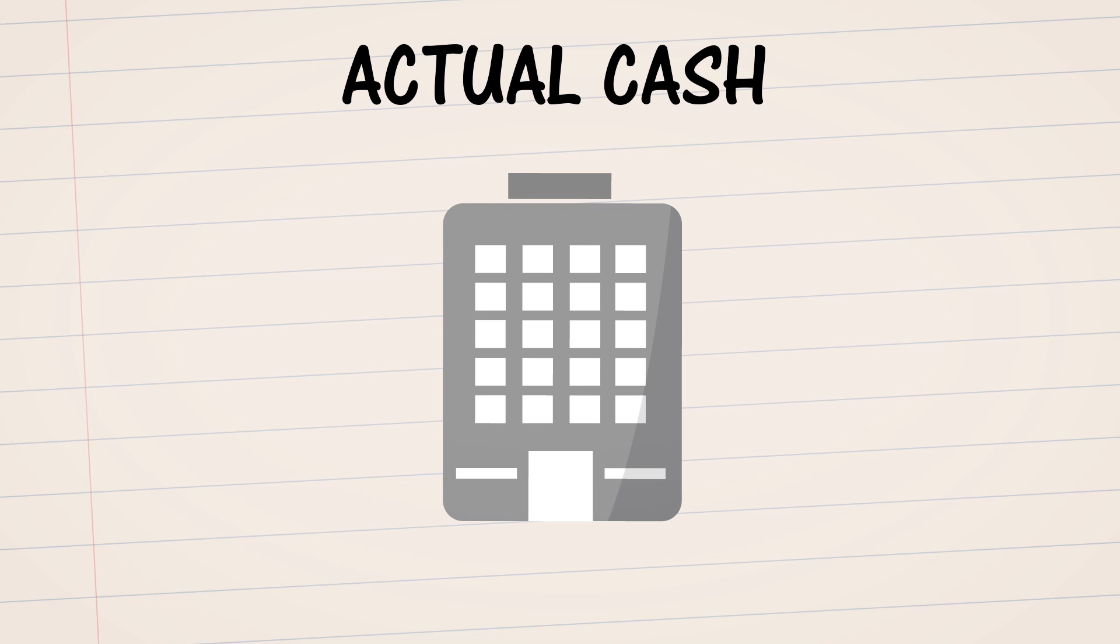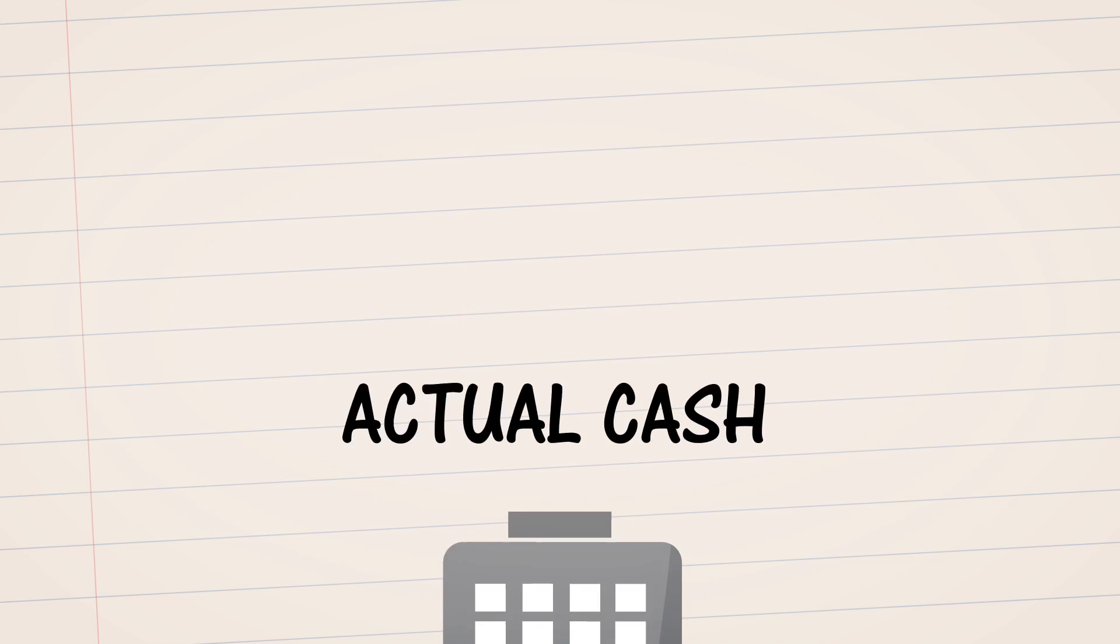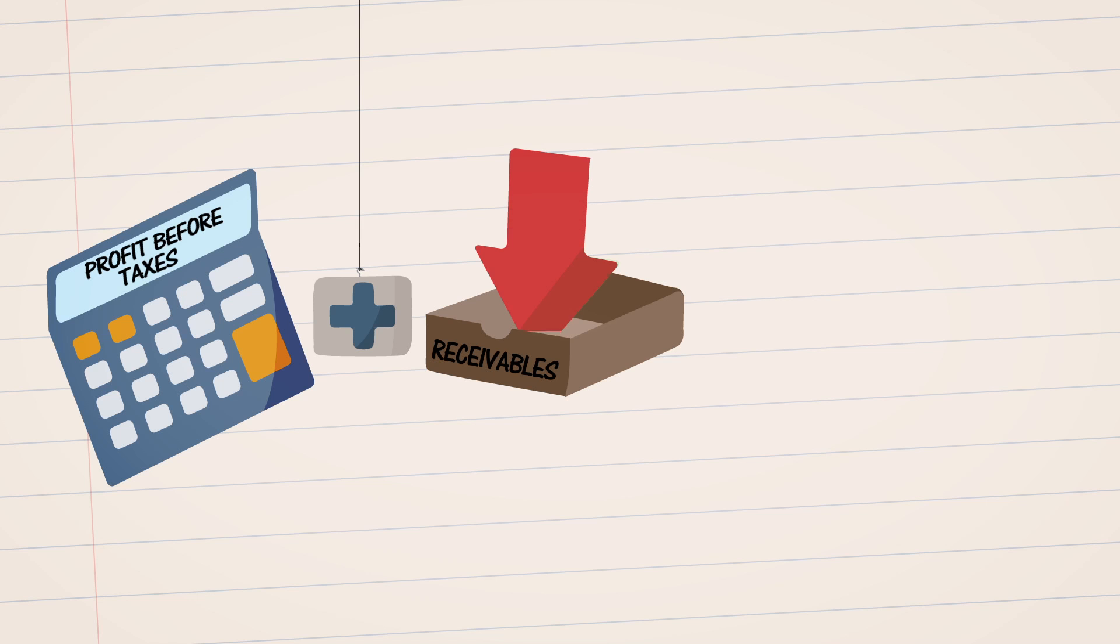First, you add together the cash flows from all operating activities, including profit before taxes, trade and other receivables, and trade and other payables.